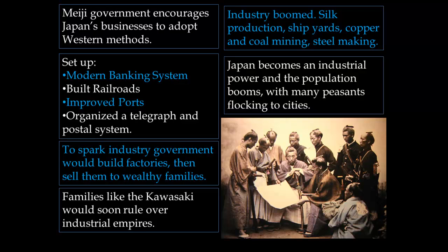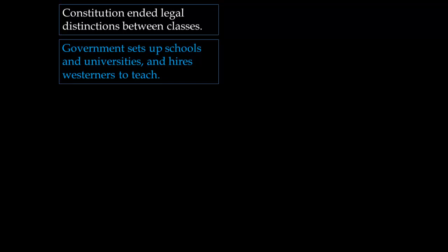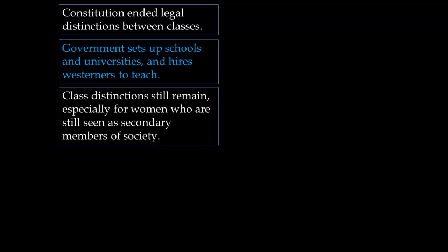Like in Europe, the population boomed with many peasants flocking to cities for work. The Meiji Constitution officially ended legal distinctions between classes, and the government tried to educate the populace by setting up schools and universities, even bringing in Westerners to teach. However, even though legal distinctions between classes ended, the class distinctions still remained.